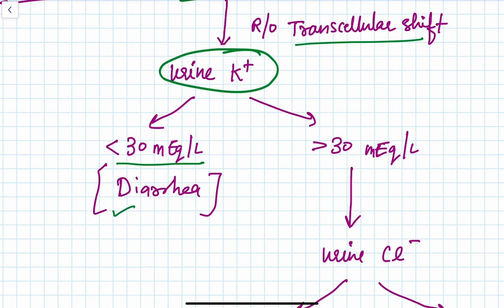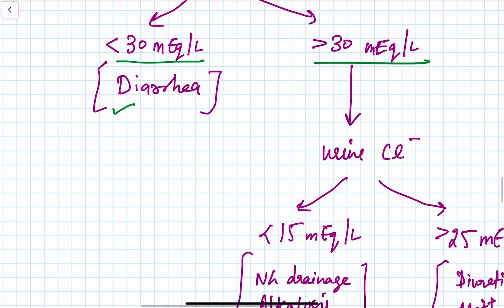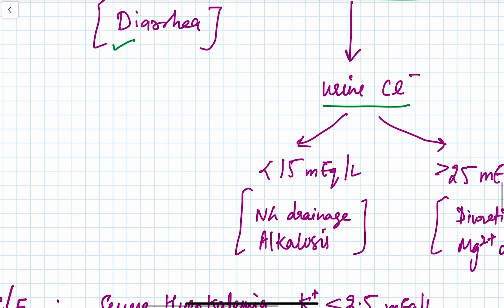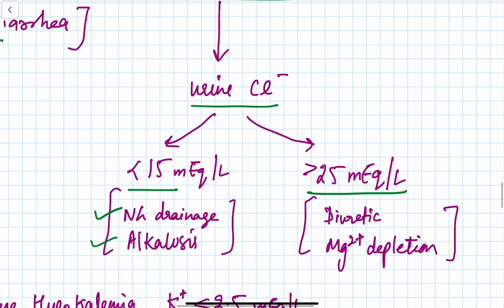If urinary potassium is less than 30 mEq/L, the cause is GI, such as diarrhea. If it's more than 30 mEq/L, we check urinary chloride levels. If urinary chloride is less than 15 mEq/L, causes are nasogastric drainage and alkalosis. If more than 25 mEq/L, causes are diuretics and magnesium depletion.